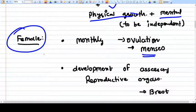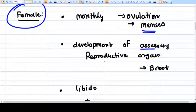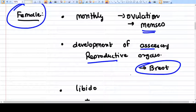Development of accessory reproductive organs like breast occurs. The breast is developed because the newborn baby will need nutrition in the form of breast milk, so development of breast is absolutely necessary for reproduction.